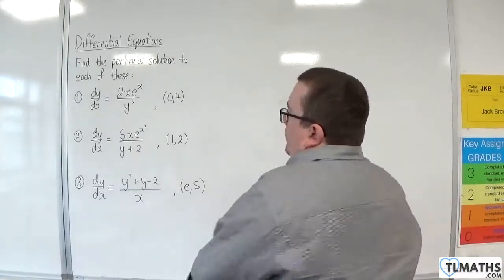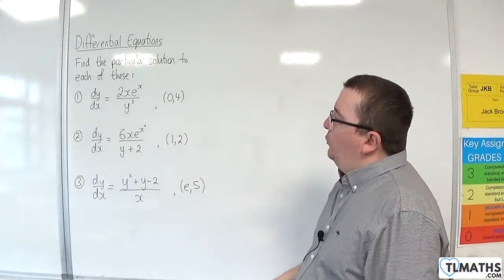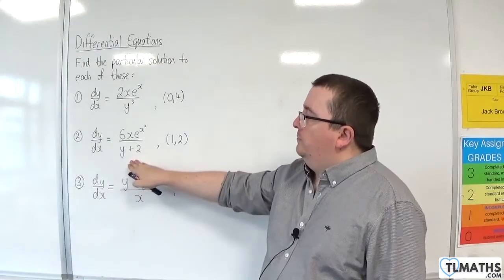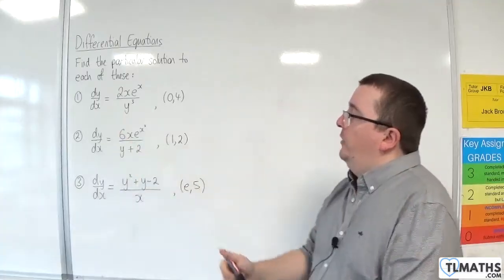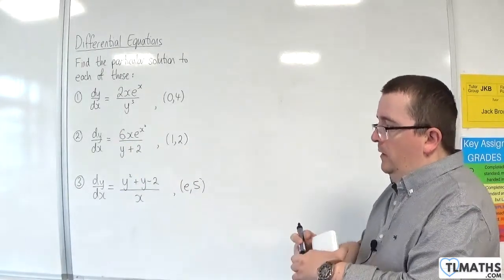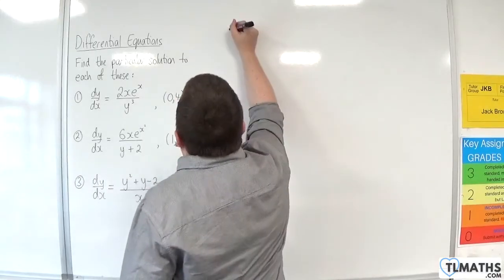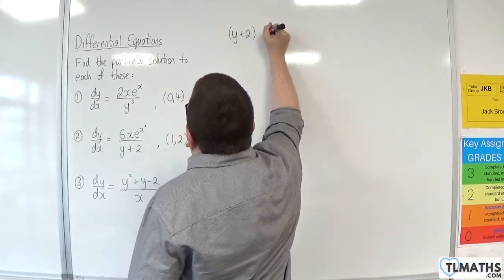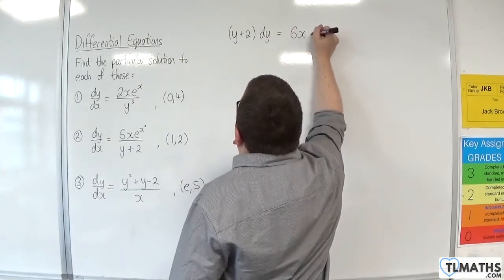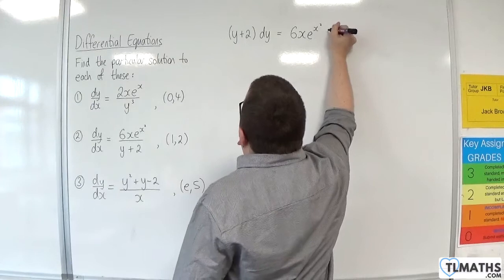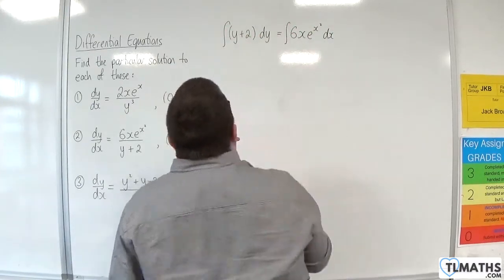Number two: dy by dx is equal to 6x e to the x squared over y plus 2. So to separate the variables, I'm going to multiply both sides by y plus 2, and multiply both sides by dx. So I'm going to get y plus 2 dy is equal to 6x e to the x squared dx, and then I'm going to integrate both sides.